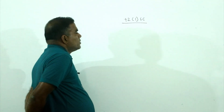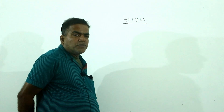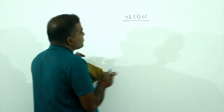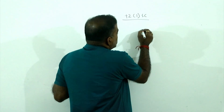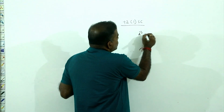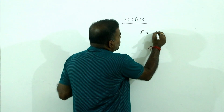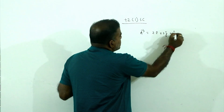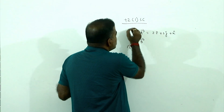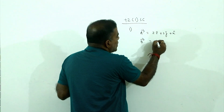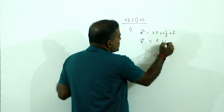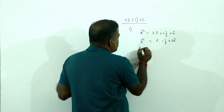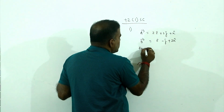Dear friends, today we will discuss some problems related to vectors. Let vector a equal to 2i cap plus 3j cap plus k cap, and vector b equal to i cap minus j cap plus 2k cap. In question number 1, how do you find the angle between them?